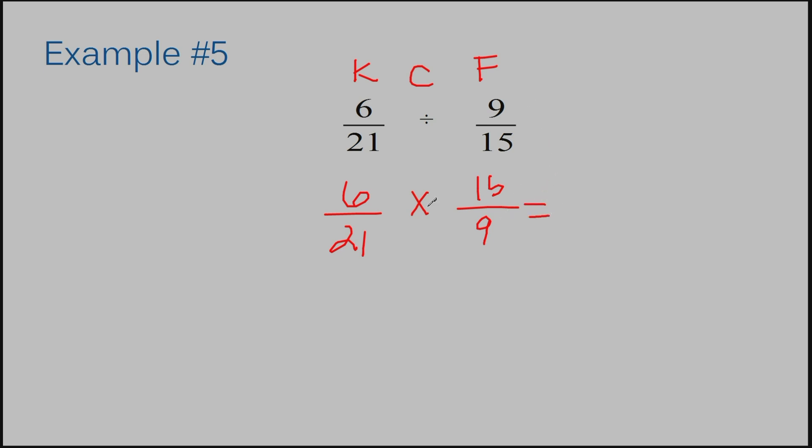Before we begin, because our numbers are kind of big, we can actually cross-cancel here. It'll give us smaller numbers to work with. When you cross-cancel, you usually work on the diagonal. So I can say, what can go into 6 and 9? And I know 3 can. So I'm going to cross this out and say, 3 goes into 6 two times. 3 goes into 9 three times.